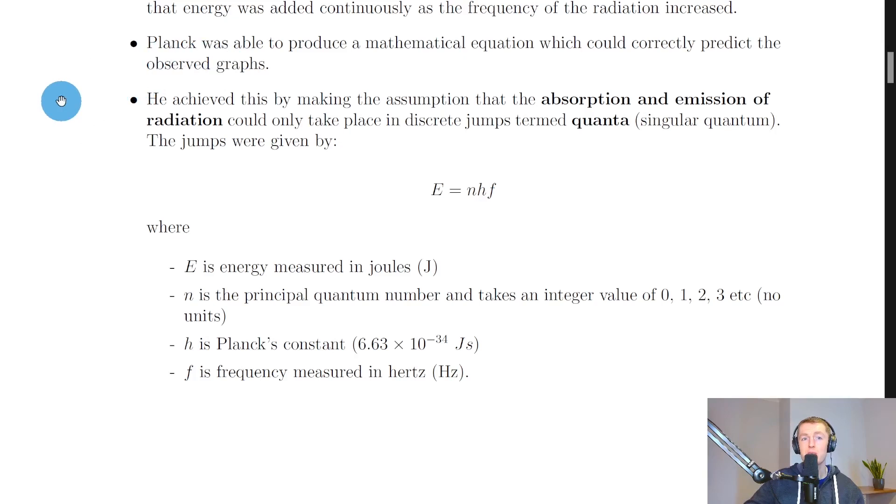However, Planck overcame this problem and was able to produce a mathematical equation which could correctly predict the observed graphs. He achieved this by making the assumption that the absorption and emission of radiation could only take place in discrete jumps termed quanta, i.e. packets of energy. The jumps were given by this energy equation here, E equals nhf.